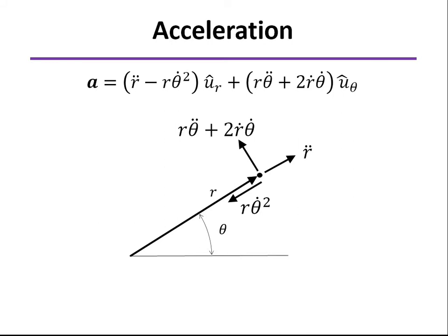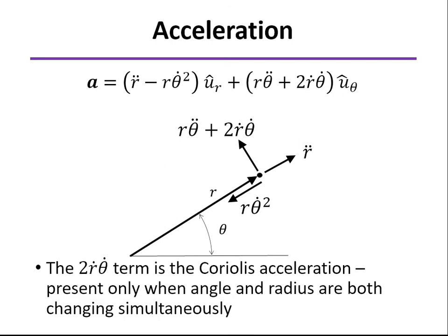Notice there's one other, this two r dot theta dot. That's termed as the Coriolis acceleration. So only when the angle and the radius are both changing at the same time do you have Coriolis acceleration.